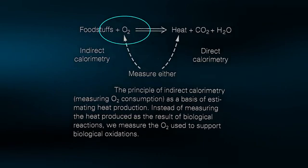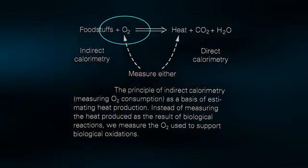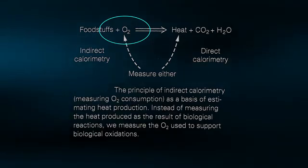A direct relationship exists between the amount of oxygen consumed and the amount of heat produced. So by measuring the rate of oxygen consumption via indirect calorimetry, we can get a very good estimate of an individual's metabolic rate.